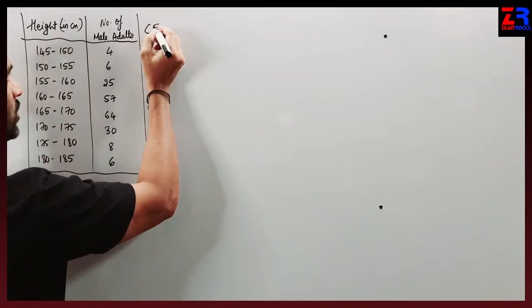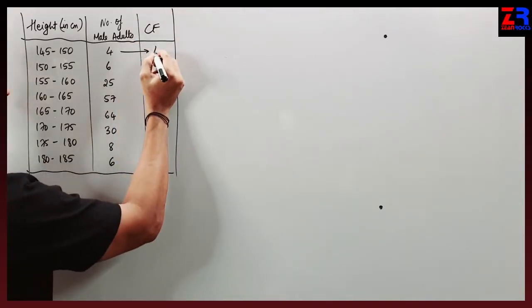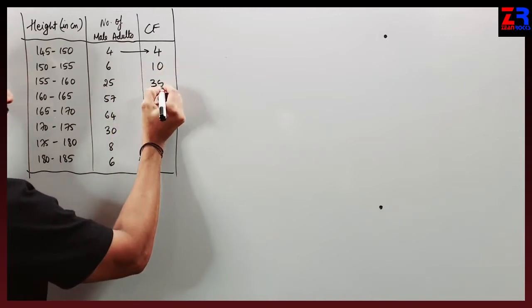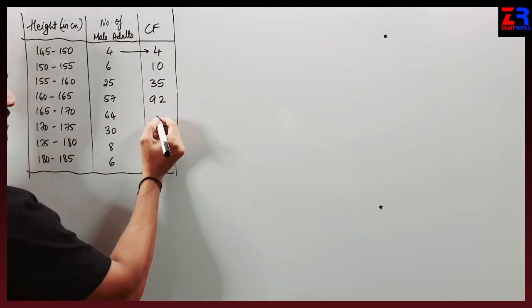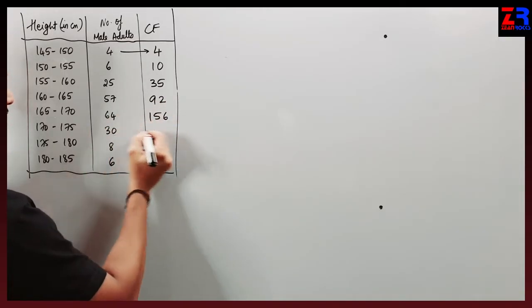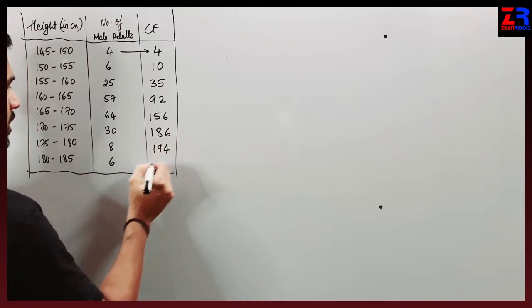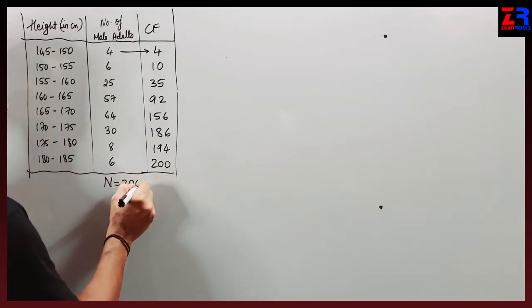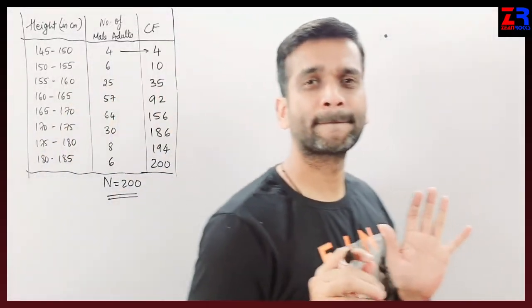First column, always prepare CF. First number remains 4, then 4 plus 6 is 10, 10 plus 25 is 35, 35 plus 57 is 92, 92 plus 64 is 156, 156 plus 30 is 186, plus 8 is 194, plus 6 is 200. So N equals 200.